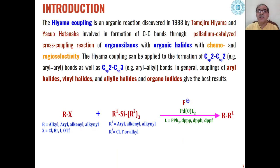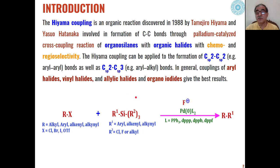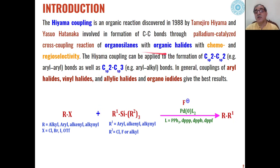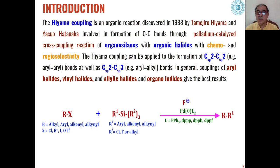The Hiyama reaction or Hiyama coupling is the combination of organic halides with organosilicon compounds in the presence of a palladium catalyst and a base. The most commonly used base is fluoride ions, for the generation of new carbon-carbon bonds. When organosilanes react with organic halides, the product formation through new carbon-carbon bond has been found to be very chemoselective and regioselective.